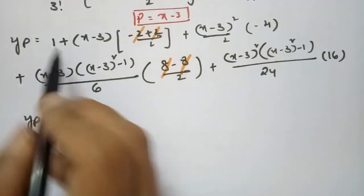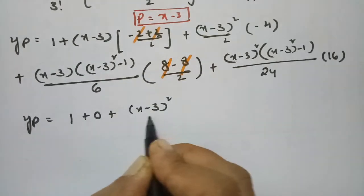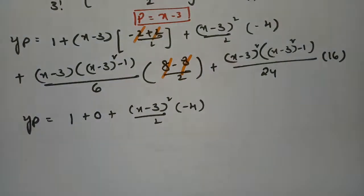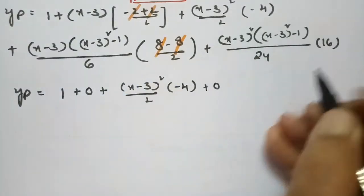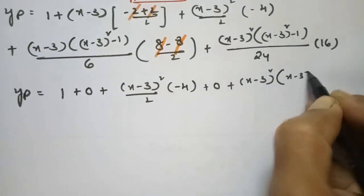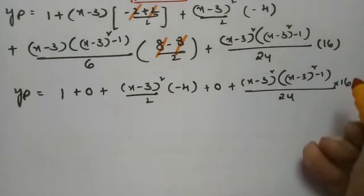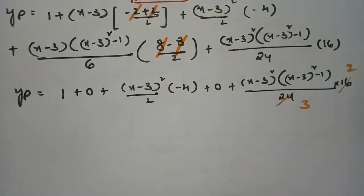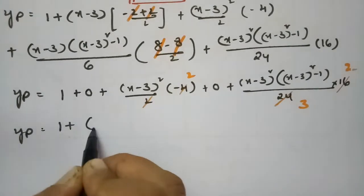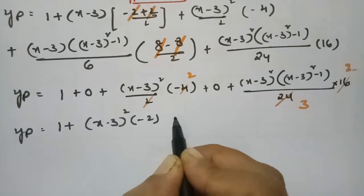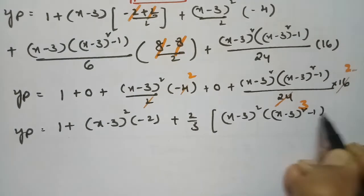So what remains is: yp equals 1, the first term is 0, then (x minus 3)² divided by 2 times minus 4, plus the third term which is also 0, plus (x minus 3)² times (x minus 3)² minus 1 divided by 24 times 16. Simplifying, yp equals 1 minus 2 times (x minus 3)² plus 2 thirds times (x minus 3)² times (x minus 3)² minus 1.